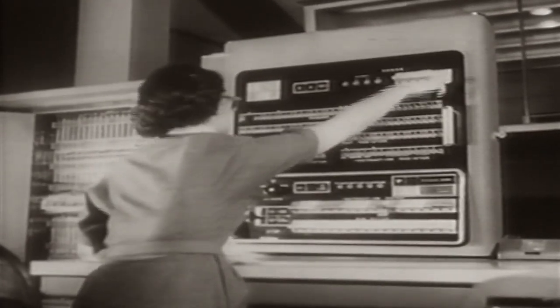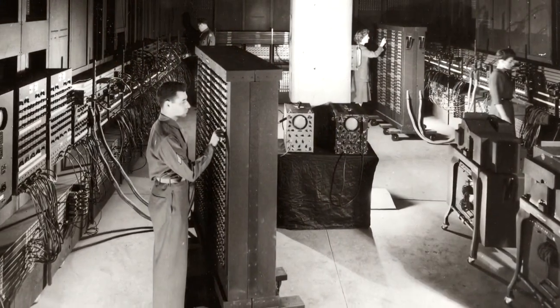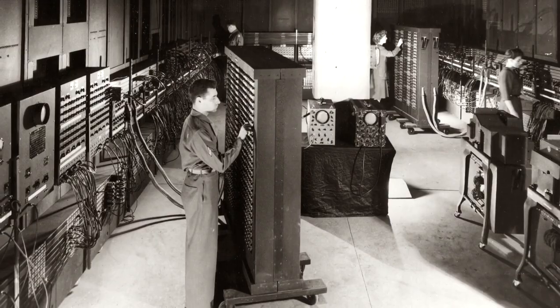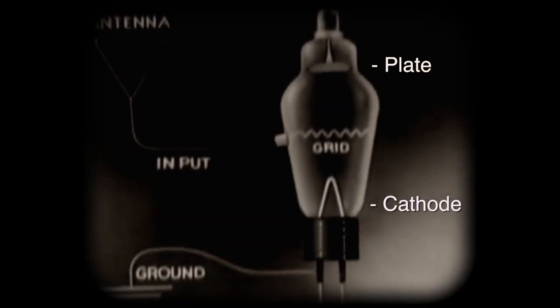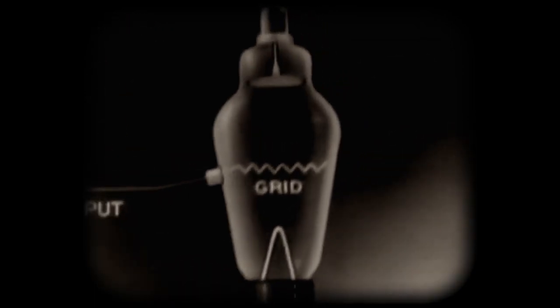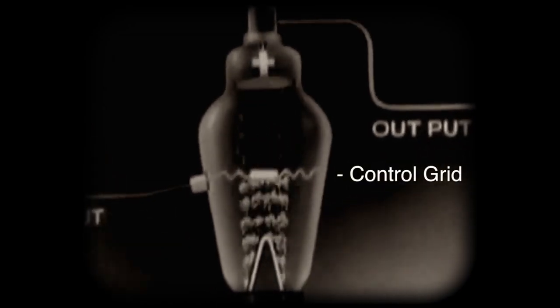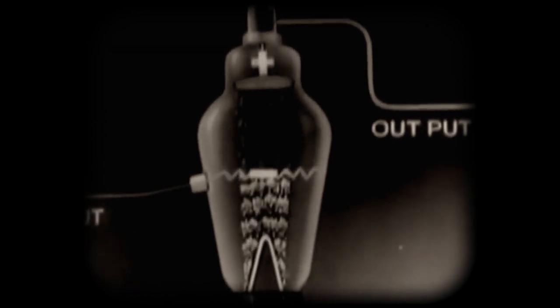The first generation of computers used vacuum tubes as switches to guide electrons through a room-sized maze of circuitry. Each tube has a cathode and a plate. When the cathode is heated, it emits electrons that are attracted to the plate. The grid in the center controls the output — if it's negative, the electron flow decreases; if it's positive, the rate increases as the electrons speed toward the plate.